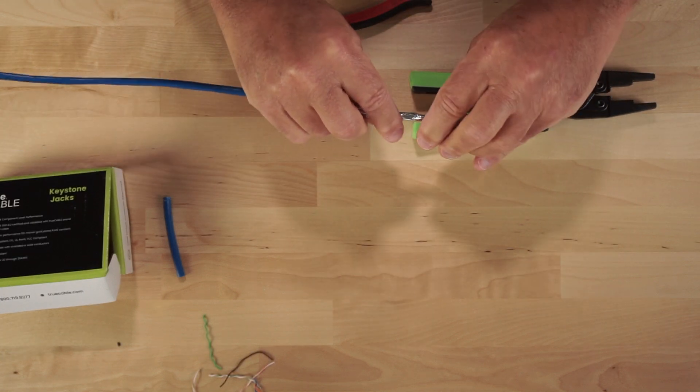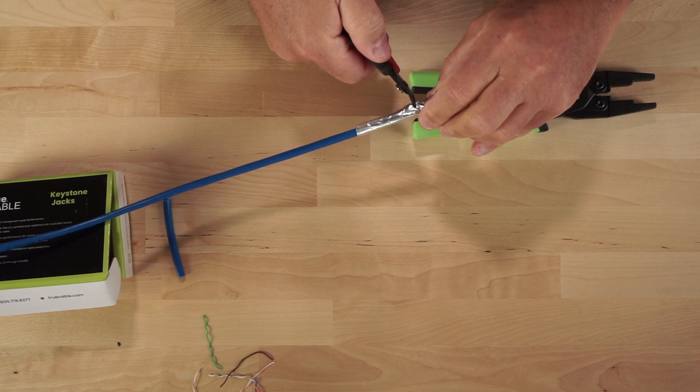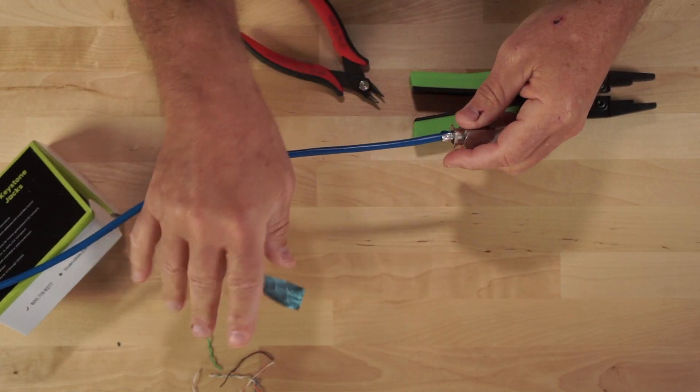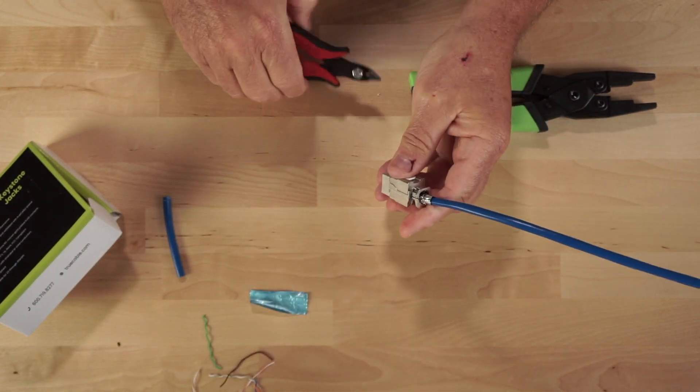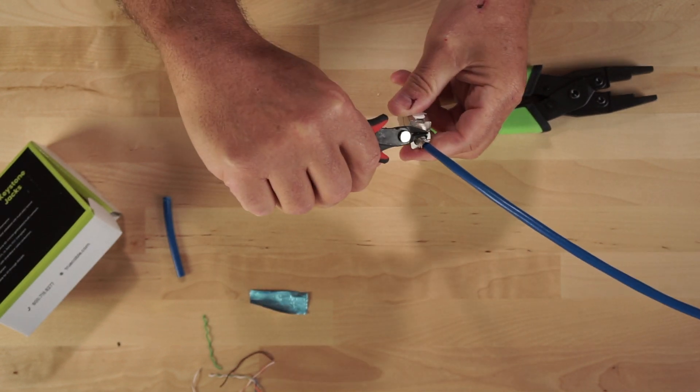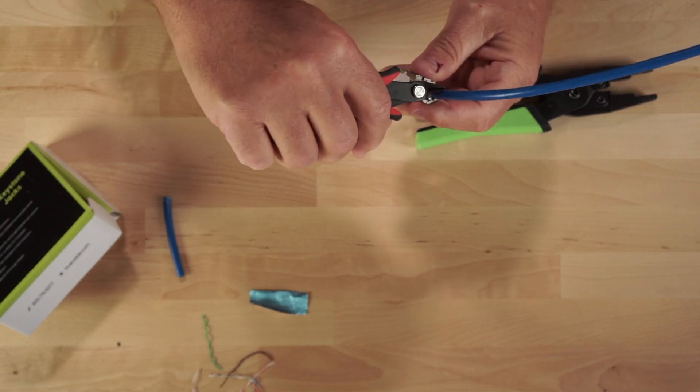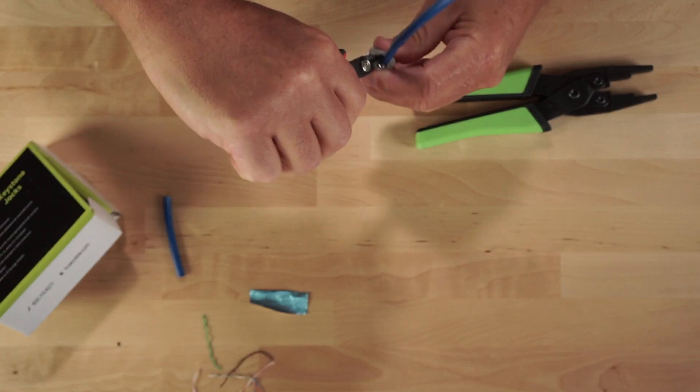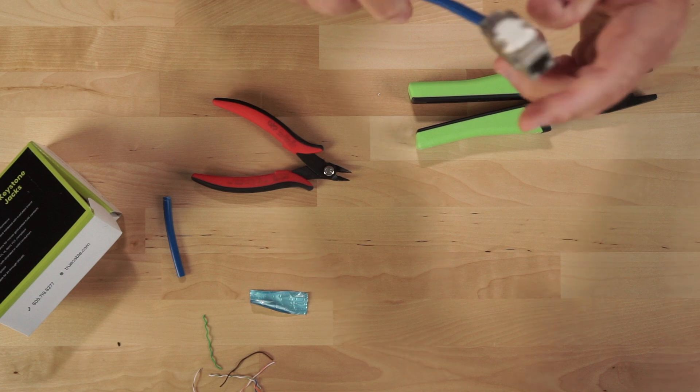And then the final thing I'm going to do is I'm going to cut back and rip off, we don't need all that shielding. I'm going to leave just a little bit there. And just to make sure we have a good bonding, I'm going to take my flush cutters in the closed position and I'm just going to shove down the shielding down into the jack.